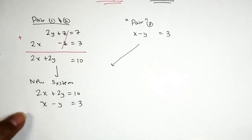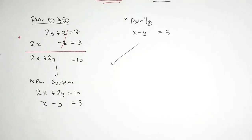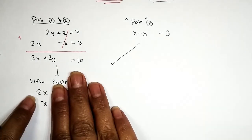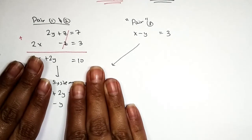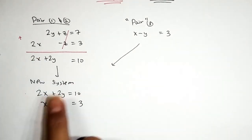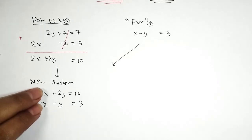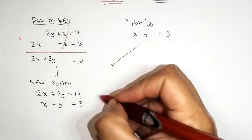Our new system is: 2X + 2Y = 10, and X − Y = 3. At this point you can solve by substitution or elimination, but I'm biased toward elimination. To eliminate the X's, the LCM of 2 and 1 is 2. To eliminate the Y's, the LCM of 1 and 2 is also 2. It's really a personal choice — I'm going to decide to eliminate Y, since we already have a positive and a negative Y term.